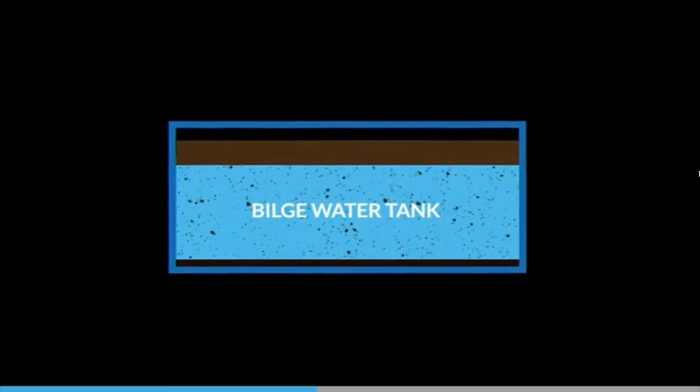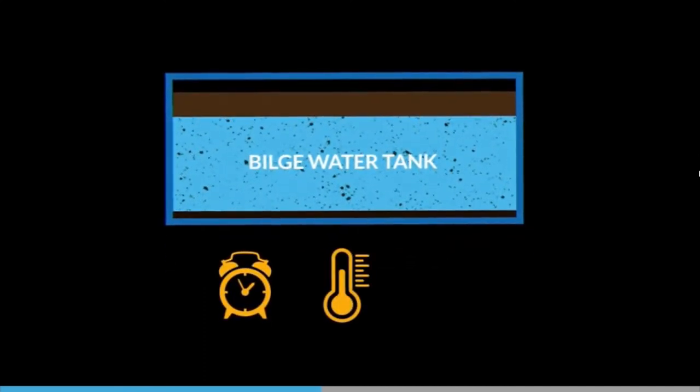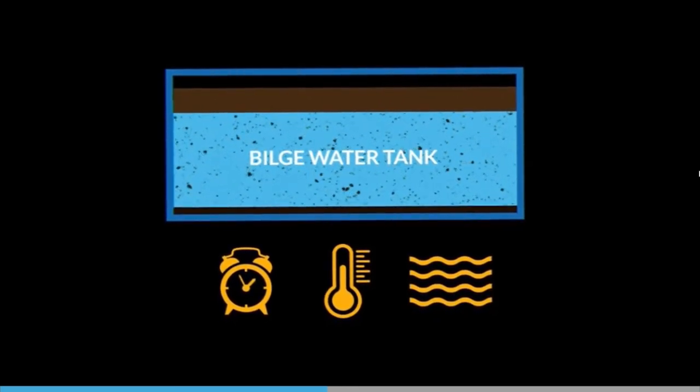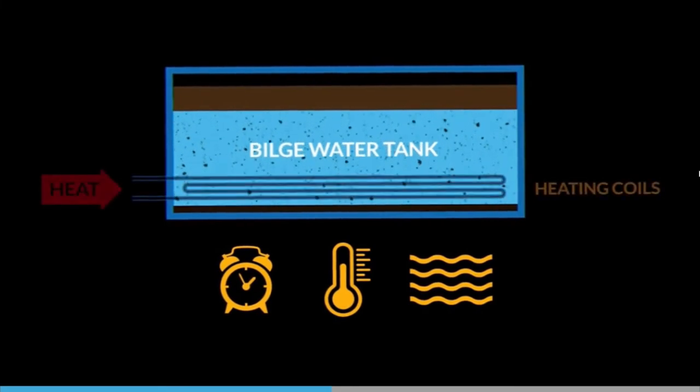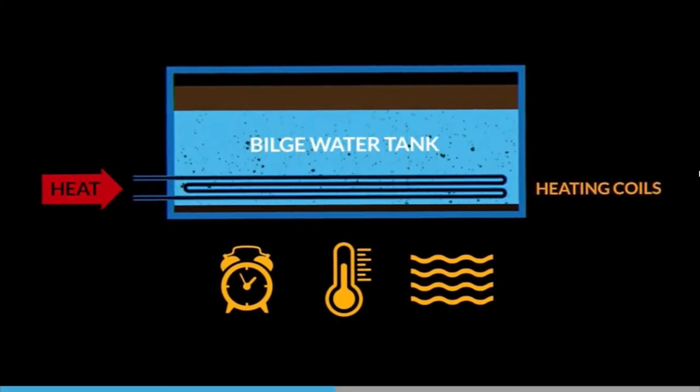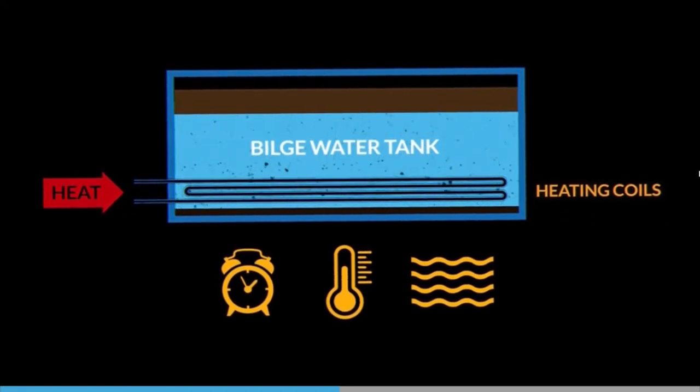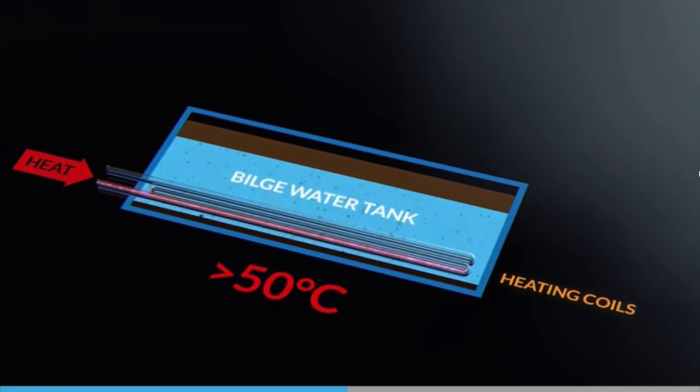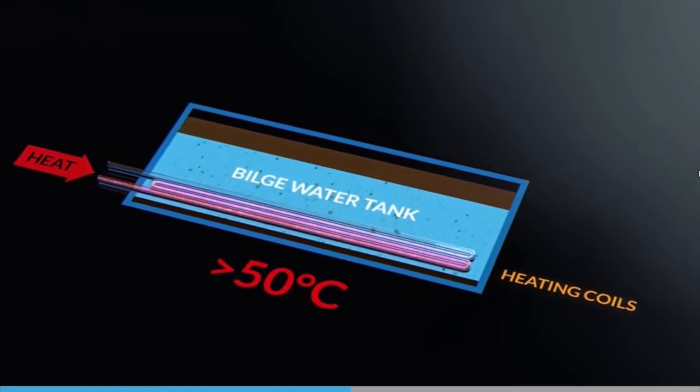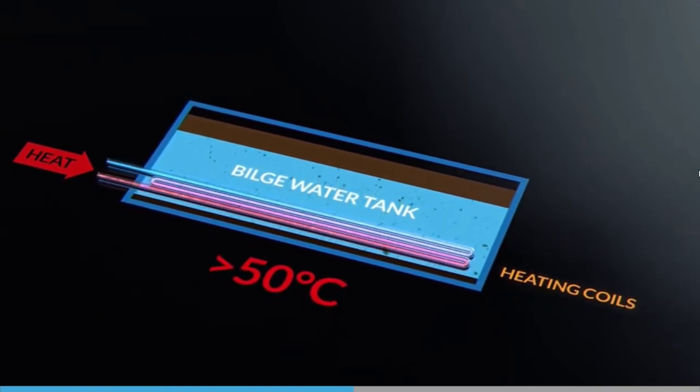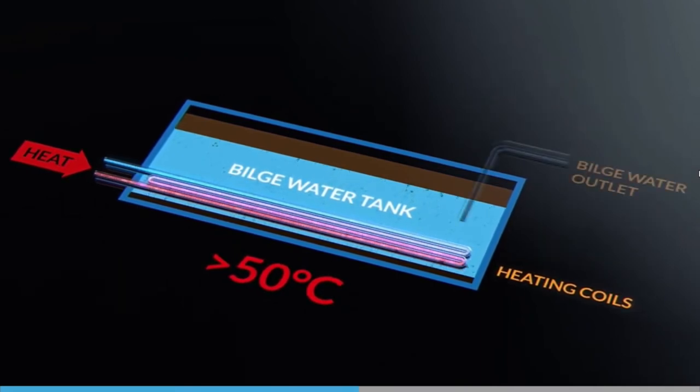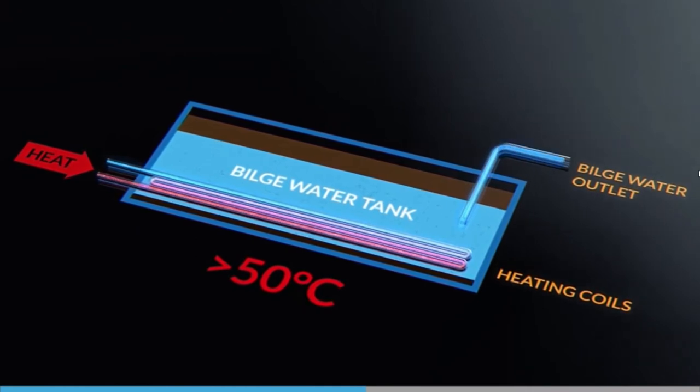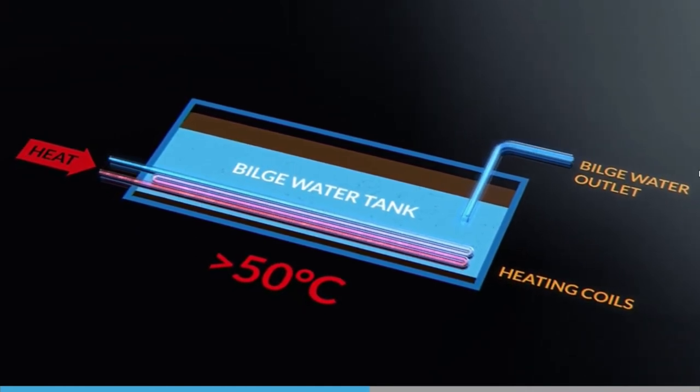Separation in the bilge holding tank can be helped by time, heat and calm seas. Calm weather and time will allow the oil and water to separate due to gravity. And heat helps reduce the viscosity of the oil, which speeds up the separation process. A temperature above 50 degrees Celsius is recommended for ships where bilge water might be contaminated with heavy oil. The suction pipe for the bilge separator should be above the heating coils to avoid sucking sediments from the bilge tank and sending them to the bilge separator.